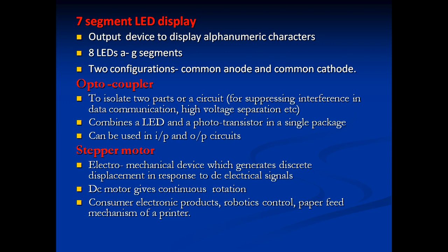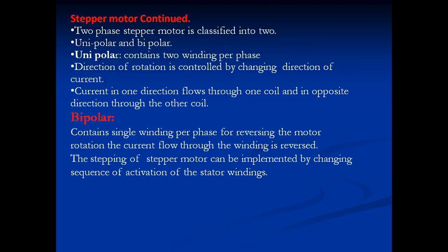An optocoupler is used in both input and output circuits. It is mainly used to isolate two parts of a circuit for suppressing interference in data communication or high-voltage suppression. It combines an LED and a phototransistor in a single package. A stepper motor is an electromechanical device that generates discrete displacement in response to DC electrical signals and is mainly used for robotic controls and paper feed mechanisms in printers.